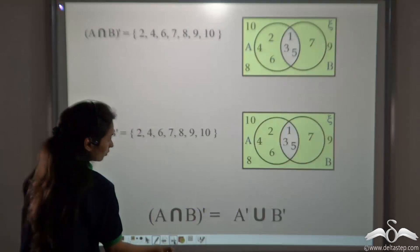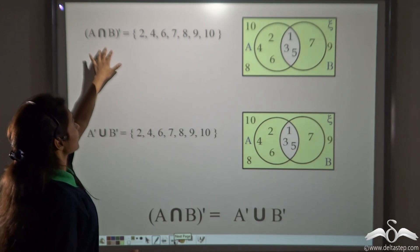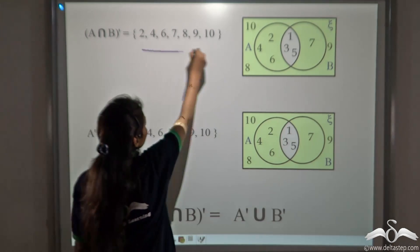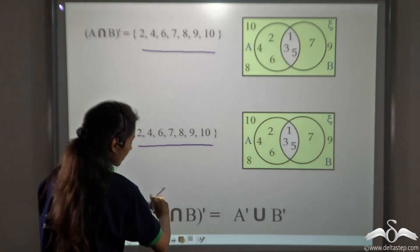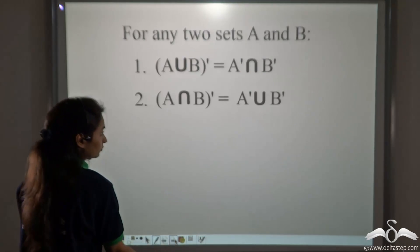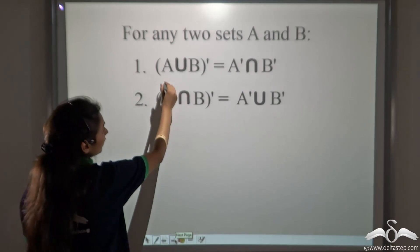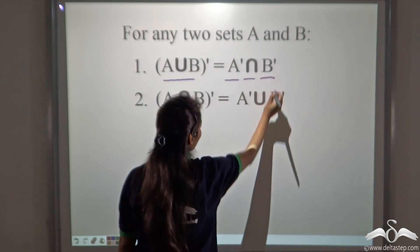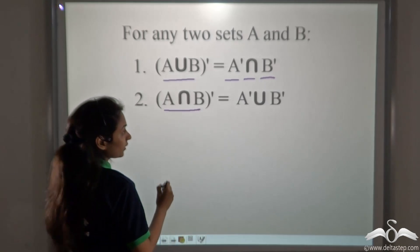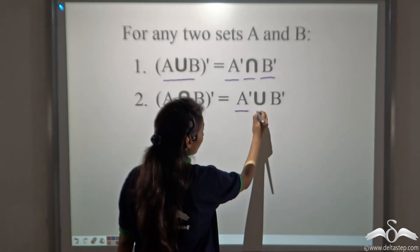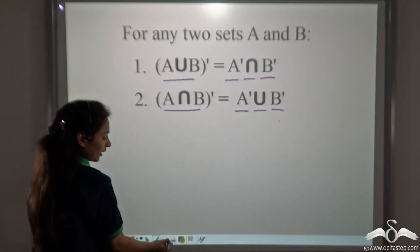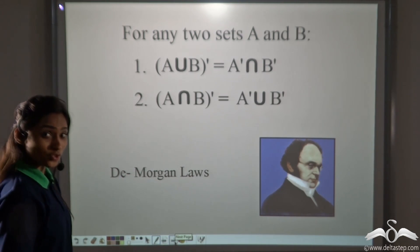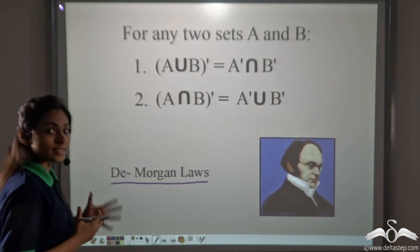So we can see that A intersection B whole complement and A complement union with B complement both gave us the same answer. This expression also holds true. For any two sets A and B: (A∪B)' = A'∩B', and (A∩B)' = A'∪B'. These laws are called De Morgan's Laws, and we studied them through these simple examples.